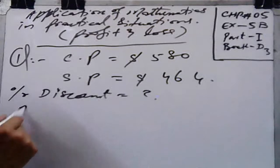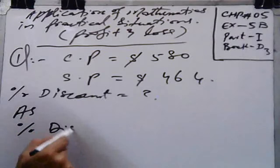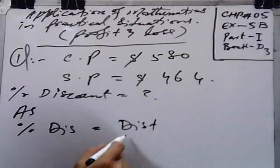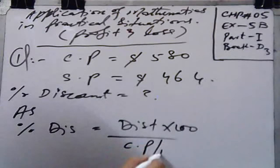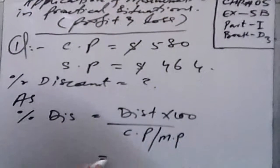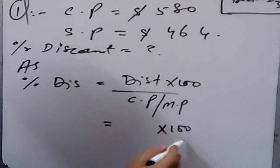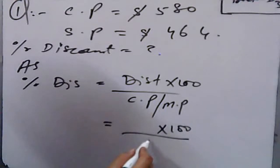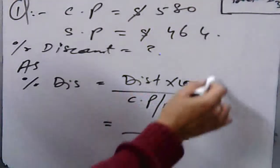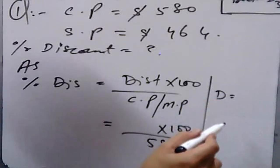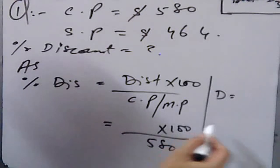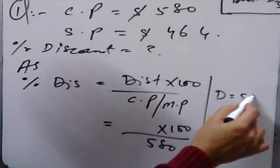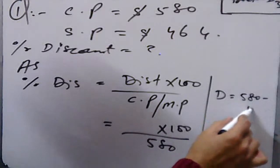To find the percentage discount, we use the formula: Percentage Discount = (Discount × 100) ÷ Cost Price or Market Price. Putting the values in, we have the market price of $580. However, we don't yet have the discount value, so first we need to find the discount.